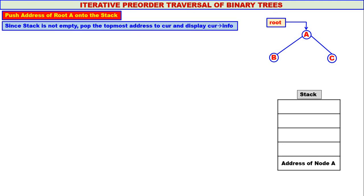Since the stack is not empty — it contains the address of node A — pop the topmost address to 'curr' and display curr's info. We pop the address of node A to curr, and curr's info is A, so A is displayed.